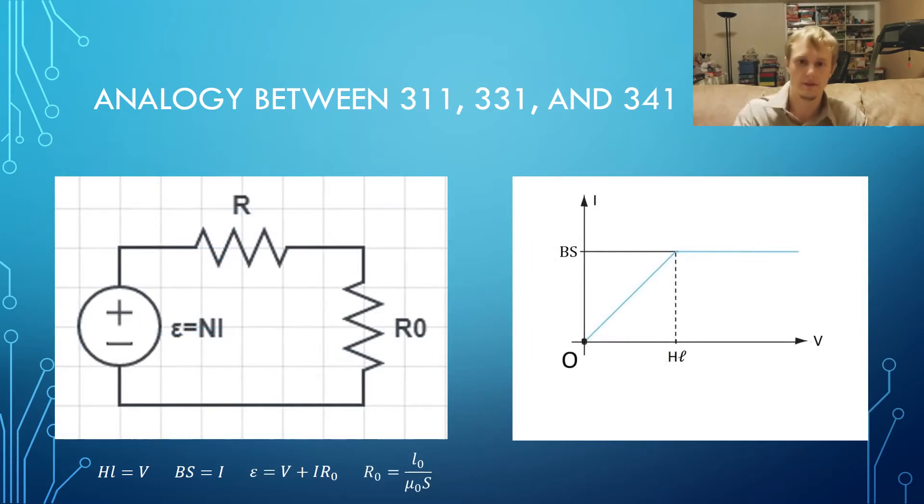We convert the magnetic circuit into the electric circuit on the left, from which we obtain the equation epsilon equals V plus IR0, with R0 equal to l0 over μ0s. We change the BH curve into an IV curve, using the idea that V equals HL and I equals BS.